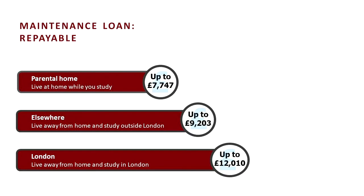The maintenance loan is repayable and assessed upon household income, so they'll be looking at the income of the parents you live with. All the criteria are on the Student Finance England website. If you're living in the parental home while you study, you can qualify for up to £7,747 a year. If you're living elsewhere, such as halls of residence outside London, you qualify for up to £9,203 a year. If you move away to study in London, you can qualify for up to £12,010 a year.